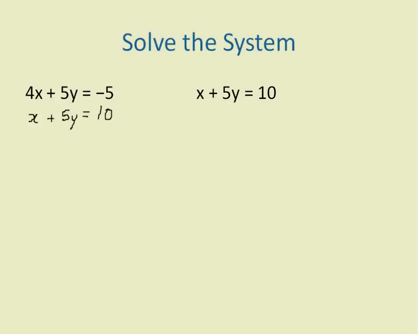But instead of adding these equations, when I combine them, adding won't do anything. 5 plus 5 will give me 10. 4 plus 1 will give me 5. So that's not going to help. What I need to do is I need to subtract these two equations.